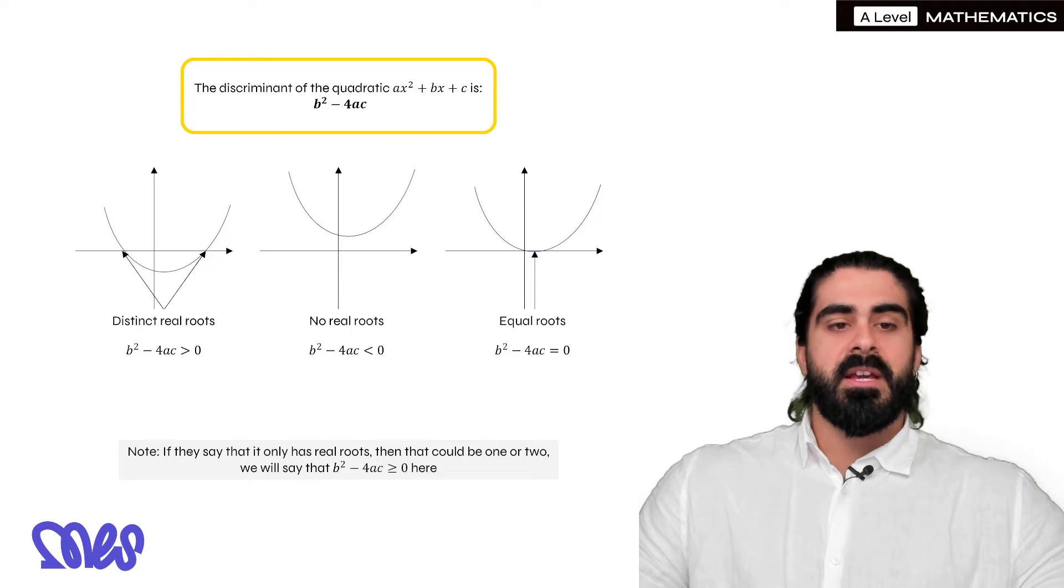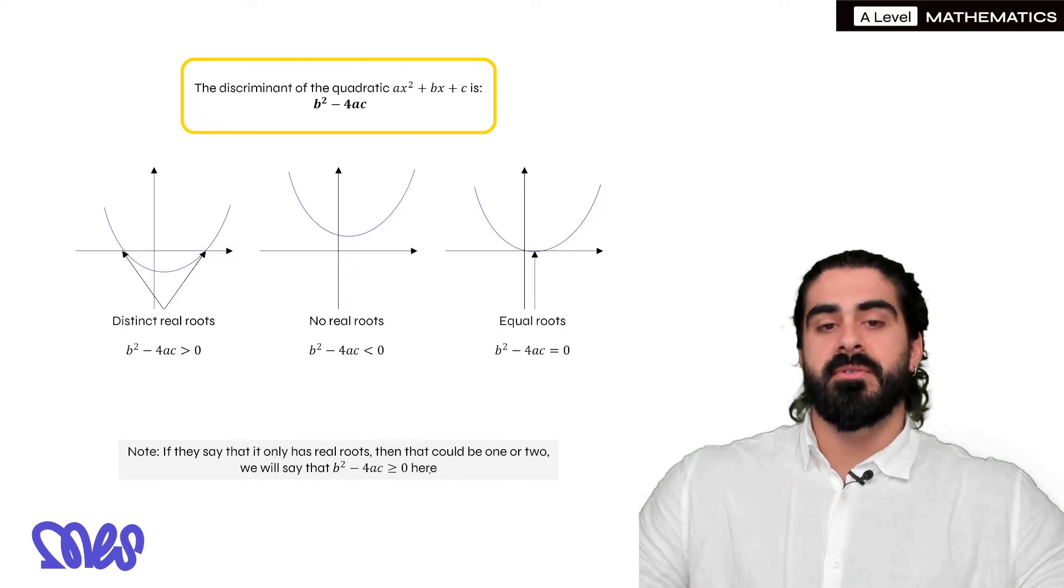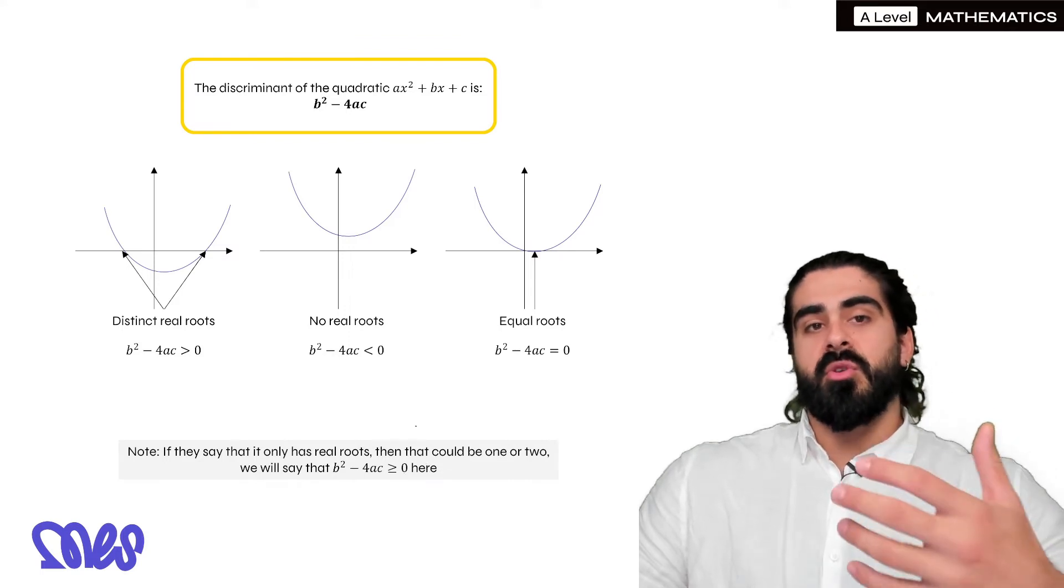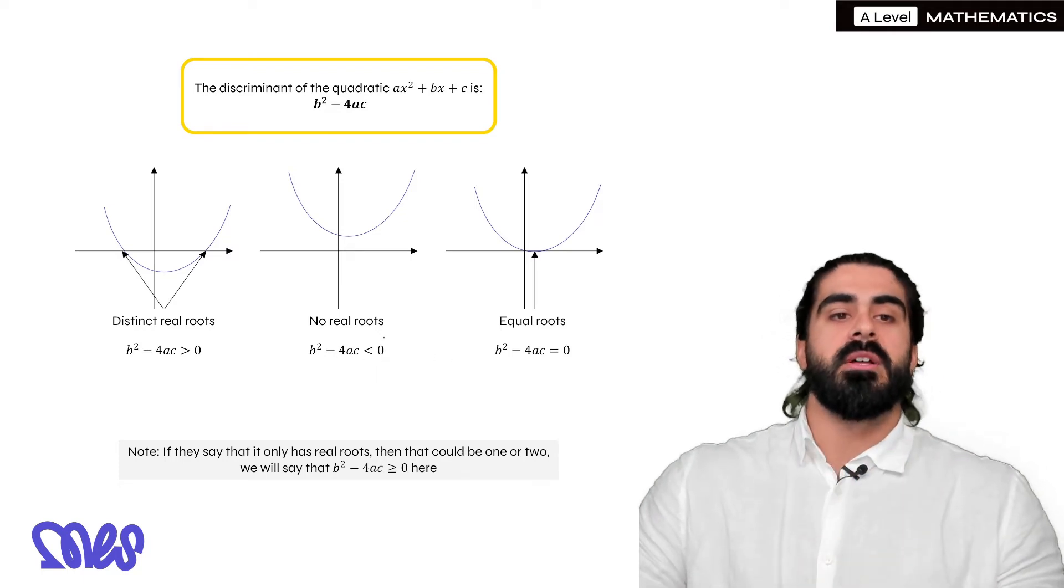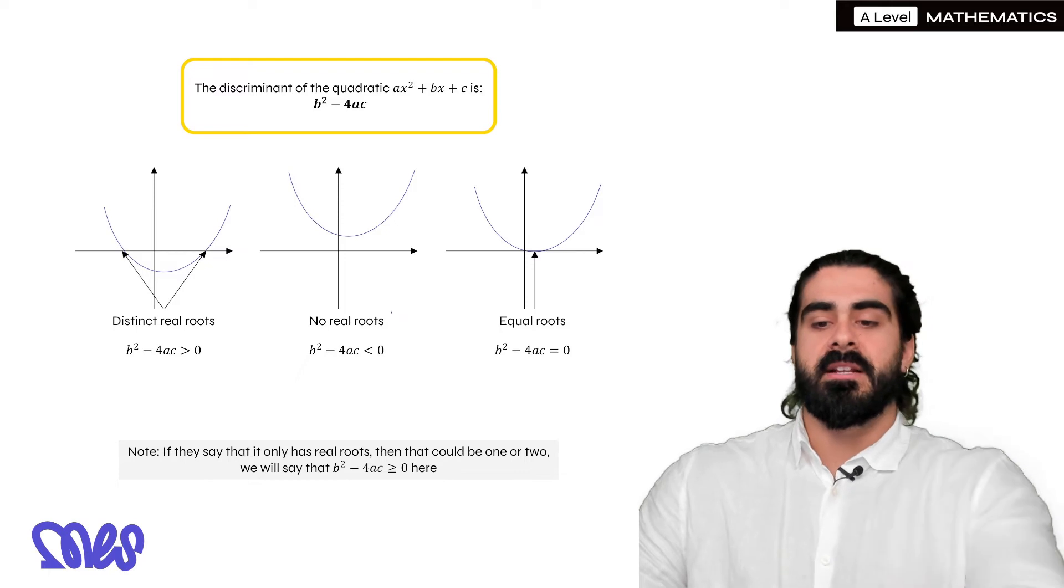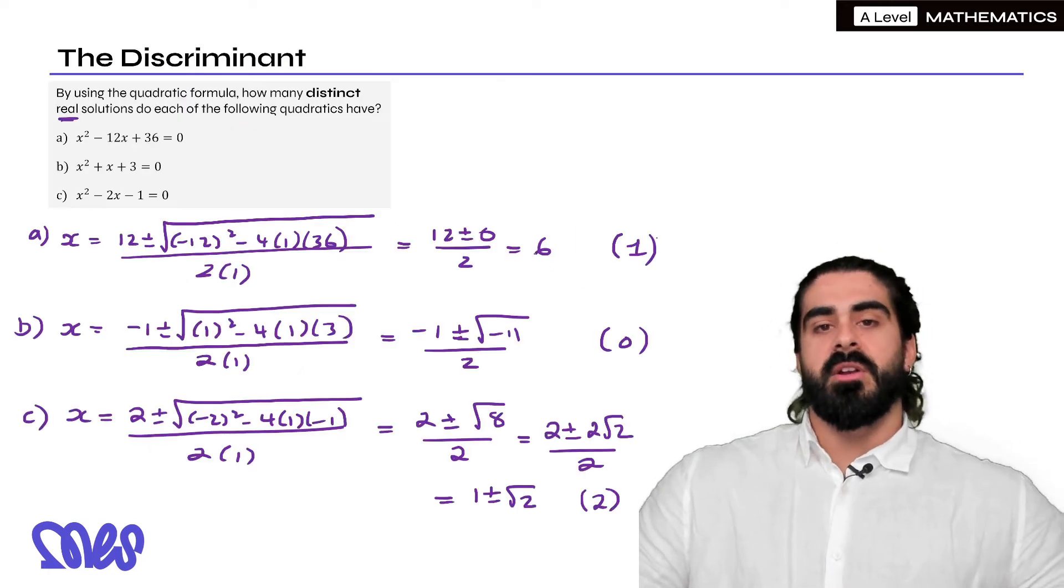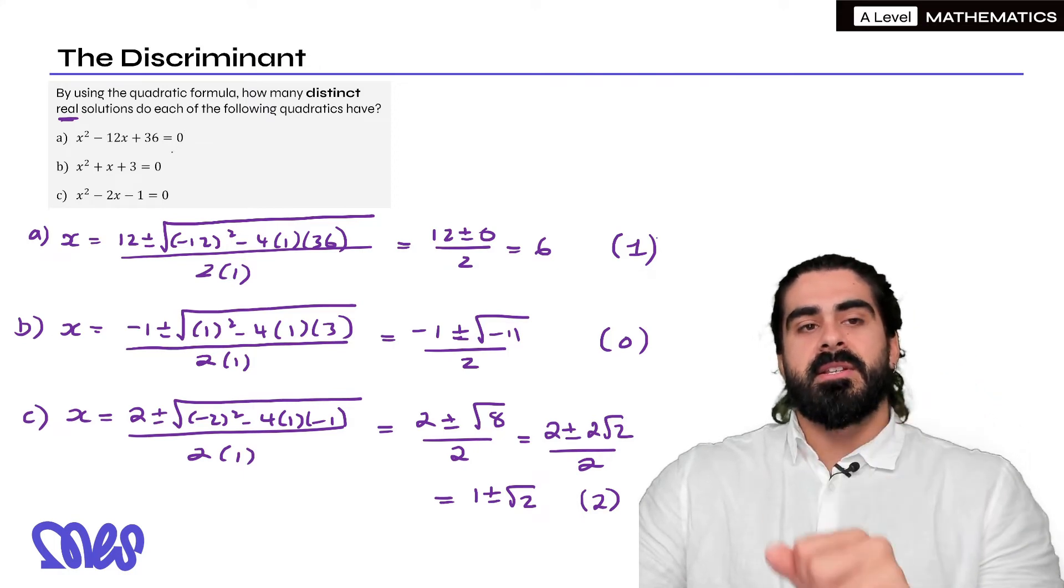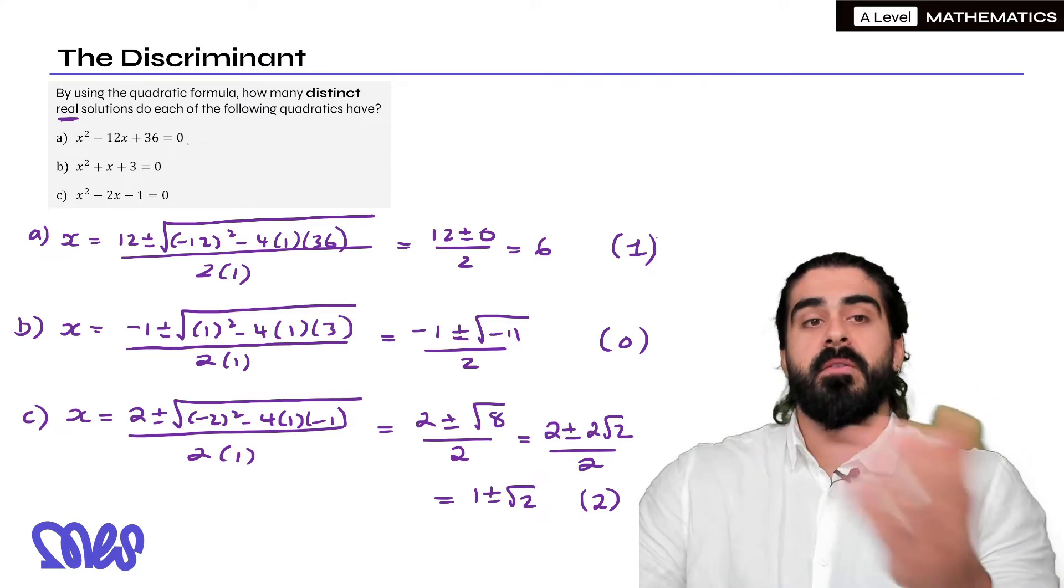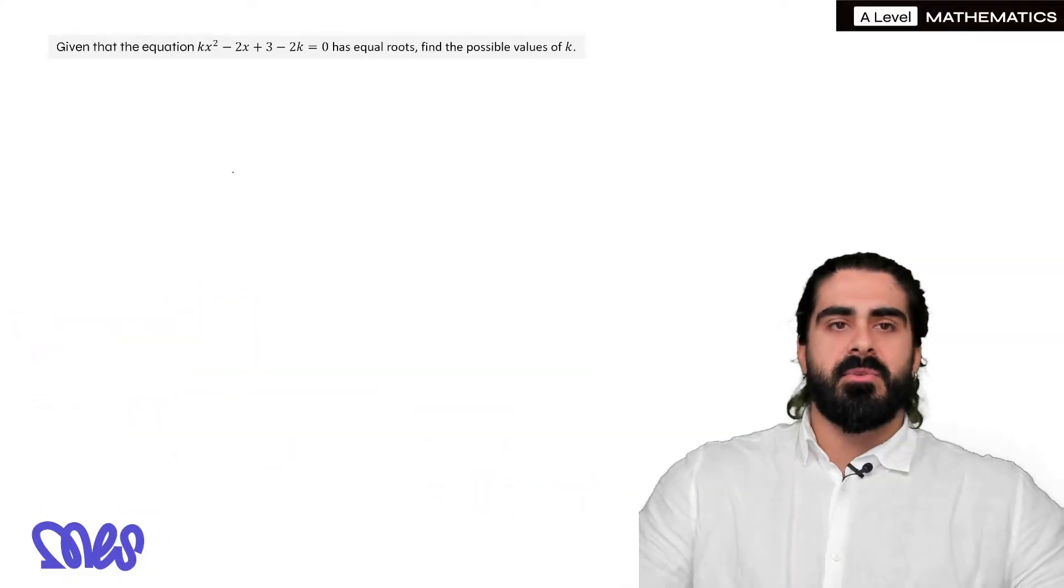Now just a quick note, if they say that it only has real roots then that could be one or two. We say then that b squared minus 4ac is bigger than or equal to zero. So the reason also we add distinct, distinct indicates that there are two that are not the same because technically with this first one when we factorize we get x minus 6 times x minus 6. So we do get two solutions both of them are 6 but they're not distinct. So let's apply it to some questions.